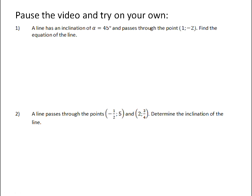Question one: A line has an inclination of α = 45° and passes through the point (1, -2). Find the equation of the line.